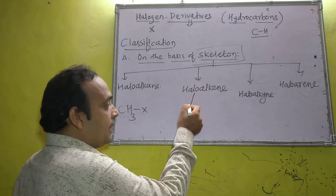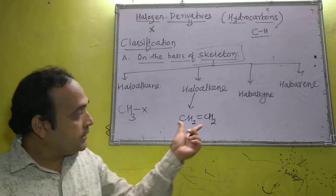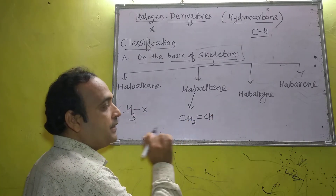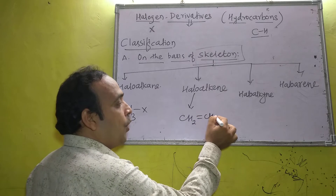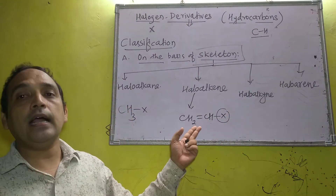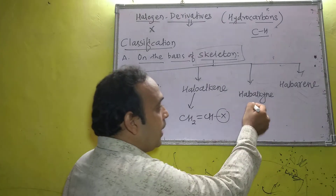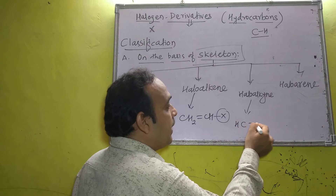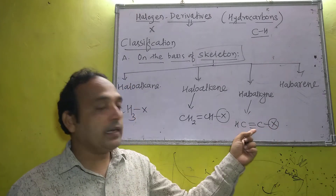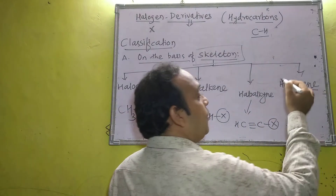Haloalkene means hydrogen atom replaced from alkene. CH2=CH2 is alkene; when one hydrogen atom is replaced, CH2=CH2 converts to CH2=CH–X. This is called haloalkene. Similarly, haloalkyne is when a halogen atom is attached to alkyne — halogen atom attached to alkyne is called haloalkyne.